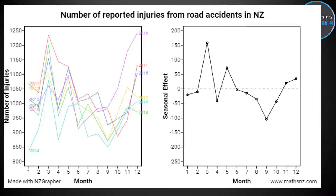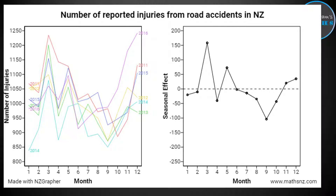You might want to talk about things like the 2014 January data being much lower than what we saw in the rest of the years, where they stayed around where the average is. You could also talk about any years that don't follow the same sort of pattern — for example, 2016, where the highest peak didn't occur in March but actually on the May spike, with the March value being a little bit lower. You can discuss those sorts of things, and also go on to look at what's called the residuals graph, which we will come to in the next video.